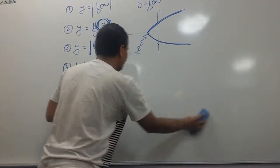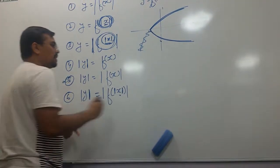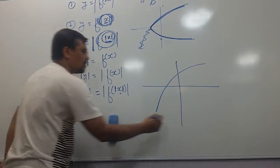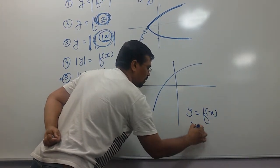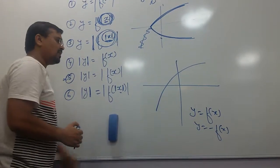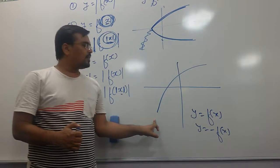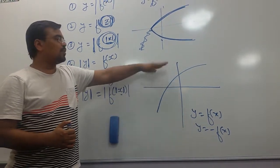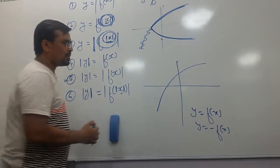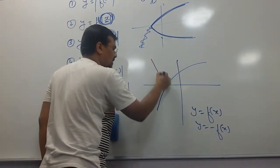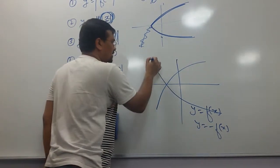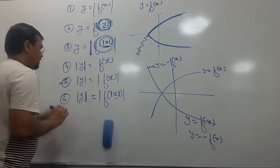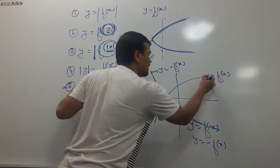For number 5, if the graph is like this, number 5 means y equal to plus f(x) or y equal to minus f(x). y equal to plus f(x) is already drawn. Our job is just to draw y equal to minus f(x), so we will rotate it along the x-axis: positive y changes to negative y, negative y changes to positive y. This graph is y equal to minus f(x), and this graph is y equal to positive f(x). Number 5 is both of these graphs together.